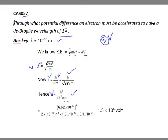And e is the charge of electron which is 1.6 into 10 raised to minus 19. And m is the mass of electron which is 9.1 into 10 raised to minus 31. So putting these values, I get my capital V as 1.5 into 10 raised to 6 volt. Thank you.